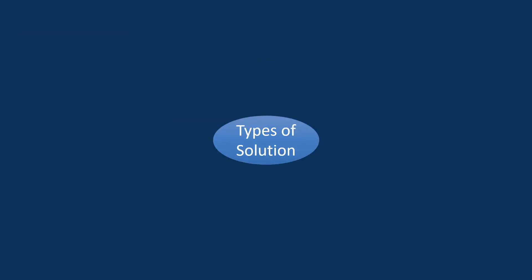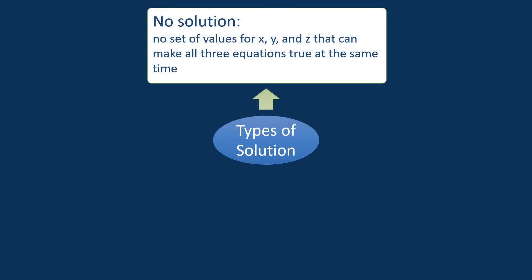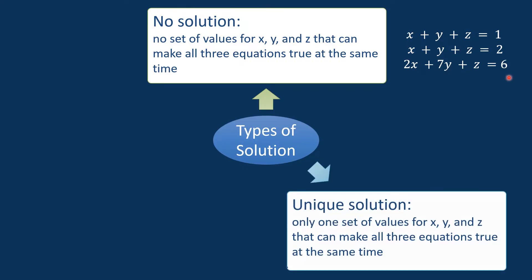A system of equations with three unknown variables can have one of the following types of solutions. First, no solution — this occurs when there is no set of values of x, y, and z that can make all three equations true at the same time. Second, a unique solution — in this case, there is only one set of values of x, y, and z that can make all three equations true at the same time.